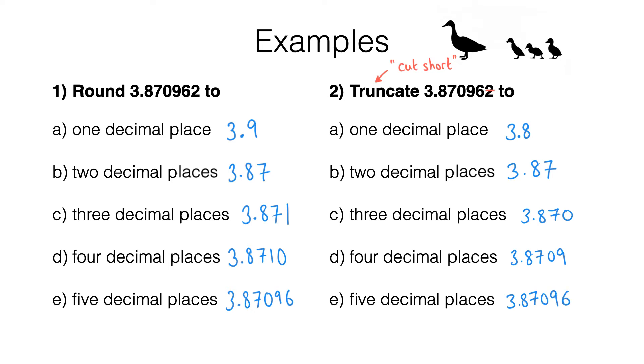I want to make a couple of observations. Sometimes when you round and truncate a number to the same number of decimal places, you get the same answer. For example, both rounding and truncating to two decimal places gives us 3.87.